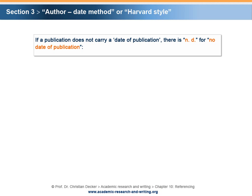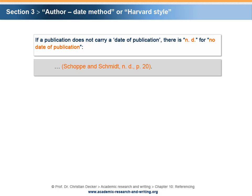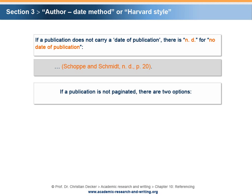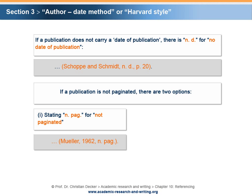If a publication does not carry a date of publication, there is nd for no date of publication. If a publication is not paginated, there are two options: stating npeg for not paginated, or counting the number of the cited paragraph.